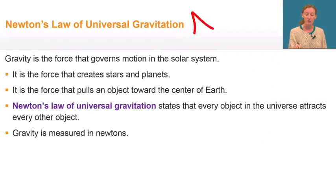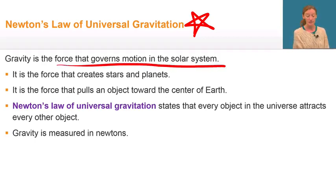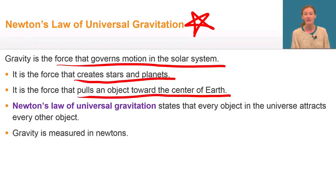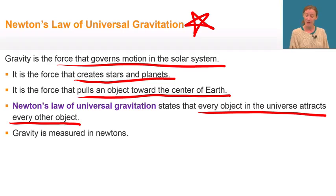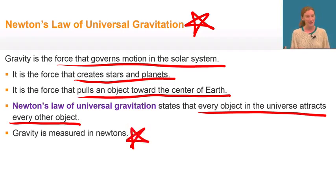Let's look at Newton's law of universal gravitation. Gravity is the force that governs motion in the solar system. It's the force that creates the stars and planets, and it's the force that pulls an object towards the center of the earth. Newton's law of universal gravitation states that every object in the universe attracts every other object. Newton didn't discover the force of gravity, but he realized that it happens everywhere. That's when he wrote his law of universal gravitation. The force of gravity is measured now in units called Newtons, named after Sir Isaac Newton.